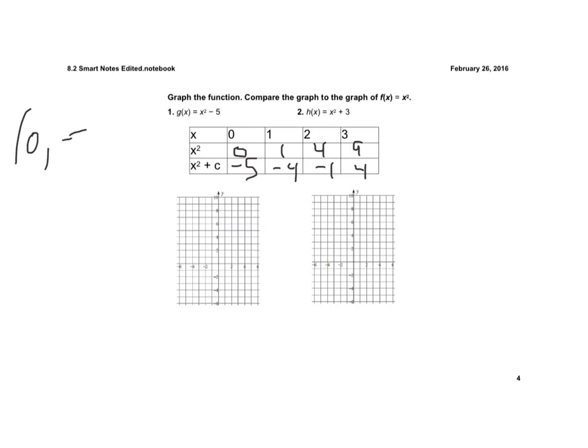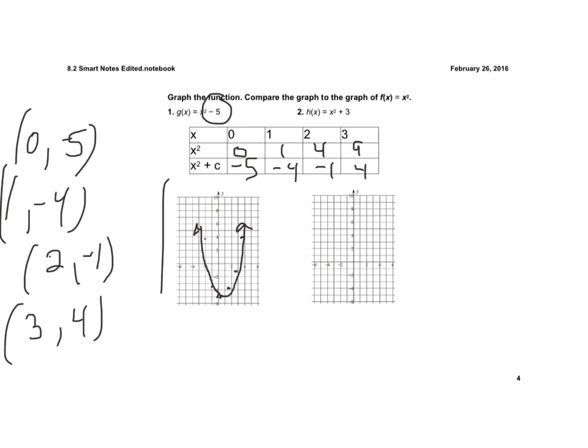So my ordered pairs are 0 comma negative 5, 1 comma negative 4, 2 comma negative 1, and then 3 comma 4. I wish my graphs were a little bigger here, but I have 0 negative 5, 1 negative 4, 2 negative 1, and 3 comma 4. I pick the points that are symmetric to them on the other side, and I make my graph. Notice how the minus 5 shifts my graph down 5 units.